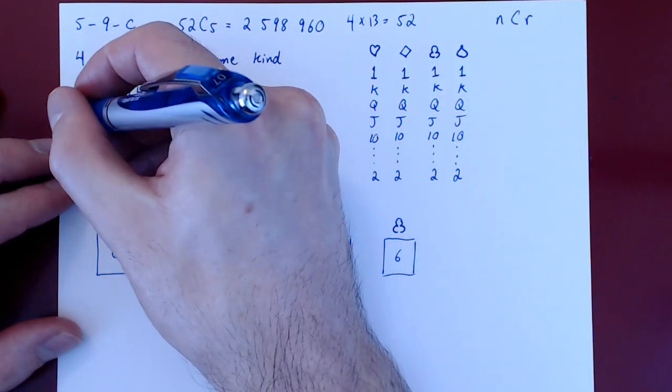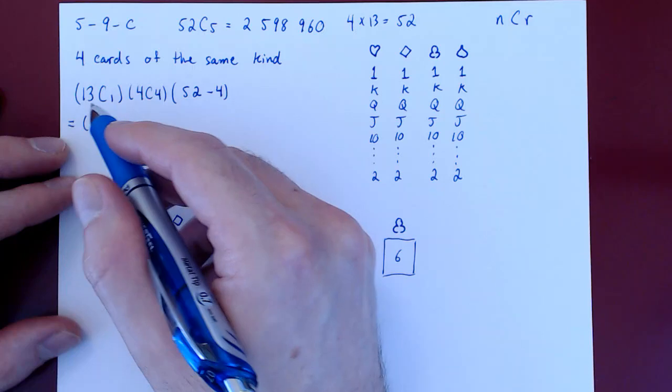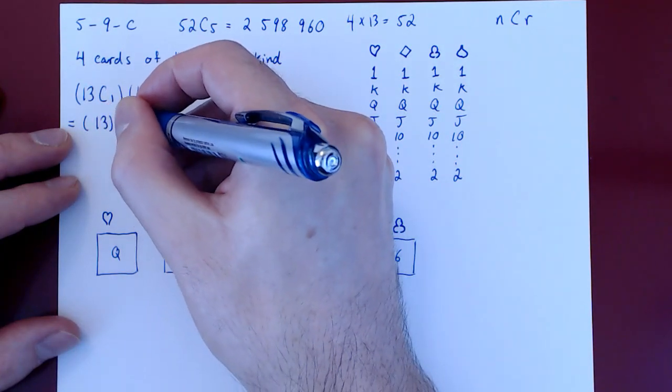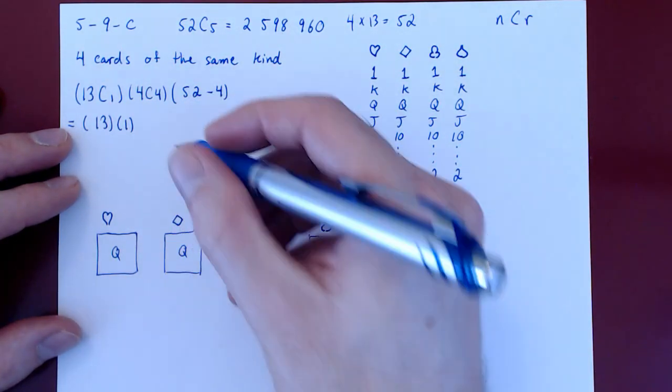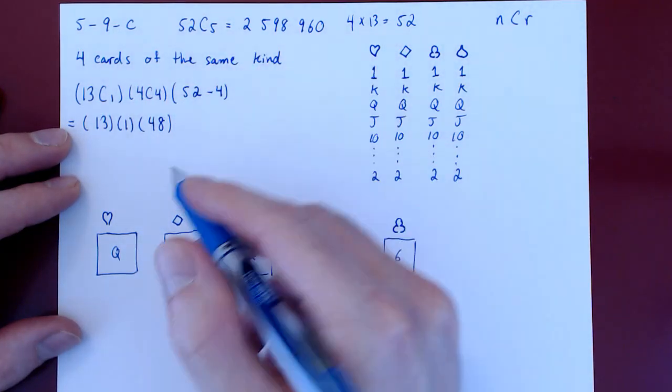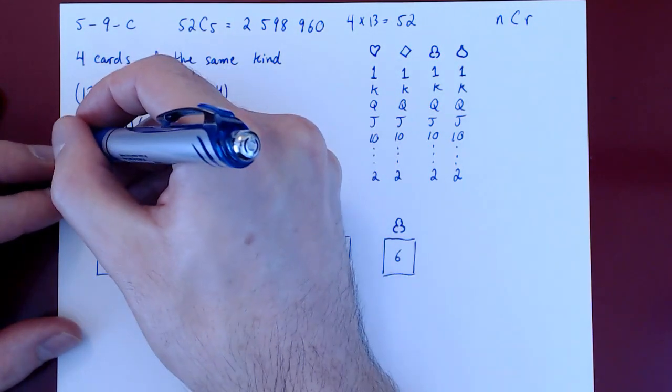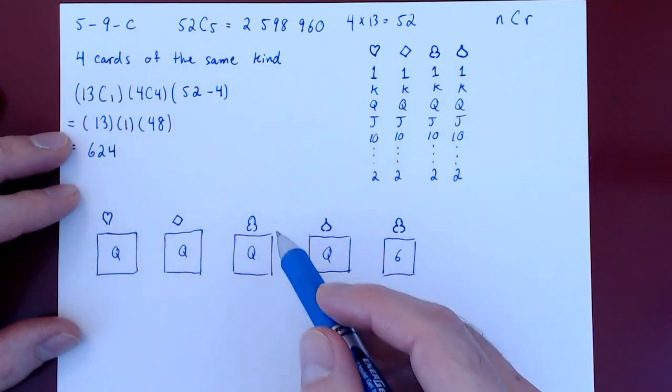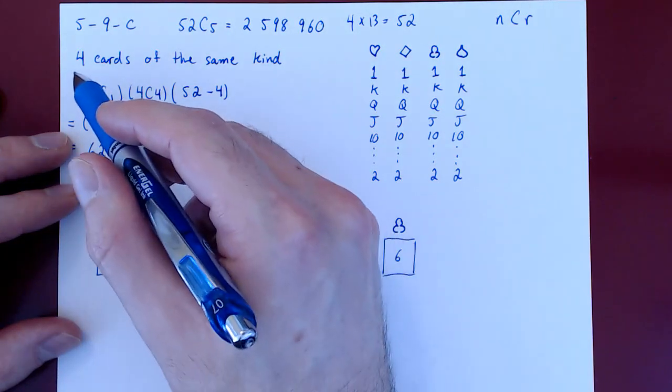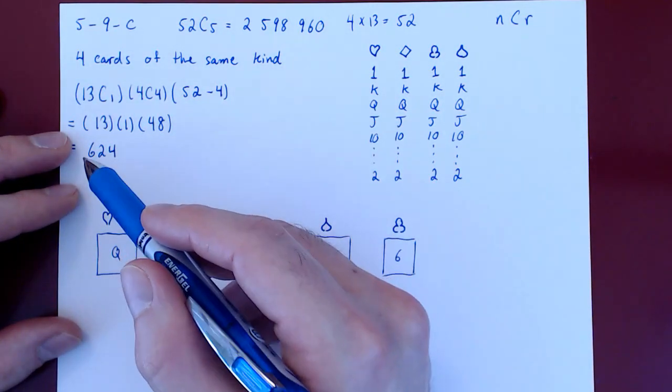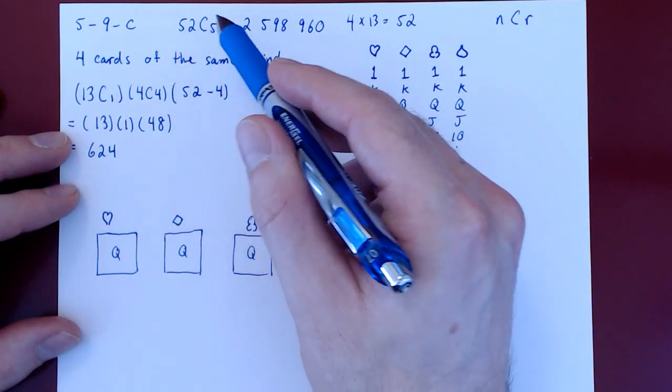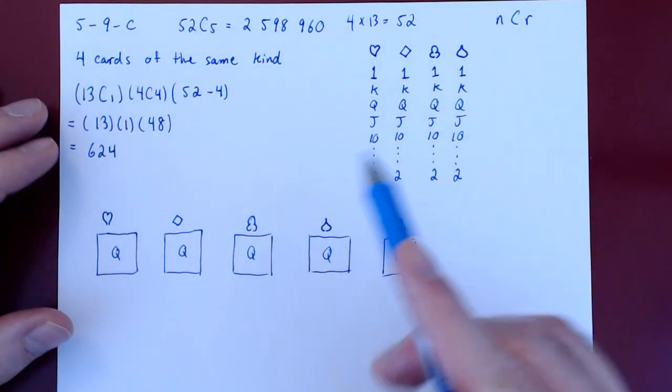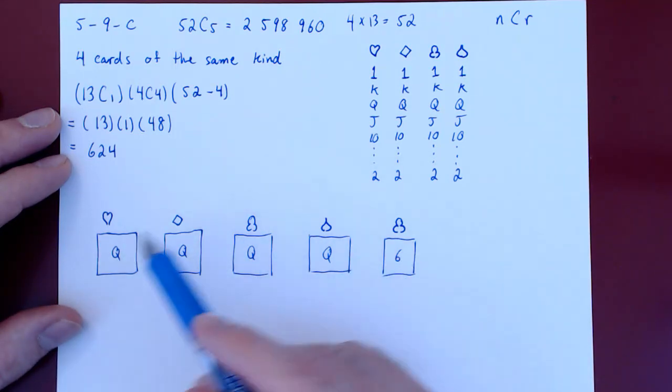We can simplify this a little bit. 13 choose 1 is 13. 4 choose 4 is 1. And 52 minus 4 is 48. If you multiply 13 and 48, you get 624. So there are 624 possible hands of 5 cards that contain a quadruple. So you can see there is not that many relative to the total number of possibilities. There are roughly 2.6 million different possible hands of 5 cards and only about 600 are hands with a quadruple.